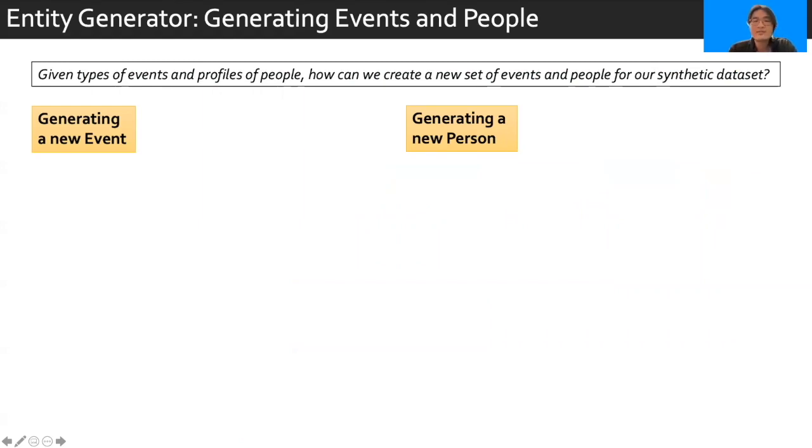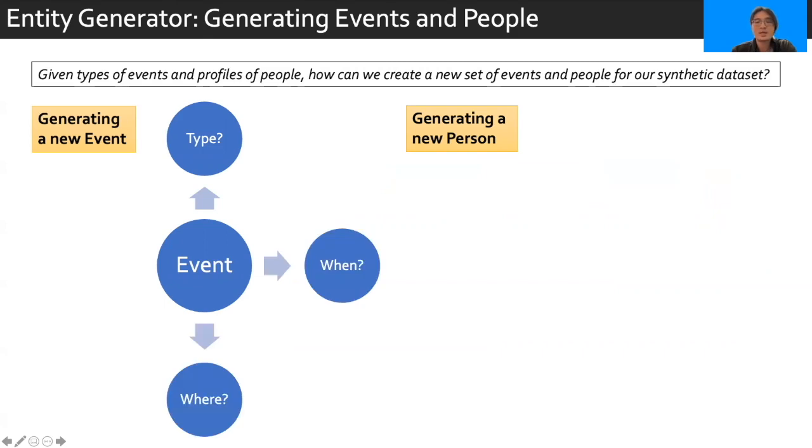The entity generator takes the types of events and profiles of people learned from the scenario learning component and uses them to create specific events and people. For events, we start by selecting the type of event to create. For example, a new lecture event or a new study event. This is going to be done with probability proportional to the number of events in the clustered group. Then, we ask when and where should this event take place. This is done by looking at the other events in this event type. Finally, we determine the types of attendees allowed to attend the event. Intuitively, if class events have 20, 23 people, 22 people, etc., and they all happen to be students, then we can find a sample mean and standard deviation to pass as parameters for a normal distribution. This normal distribution can then be sampled to find the maximum number of each type of attendee allowed. Combining this information together, we have a newly generated event.